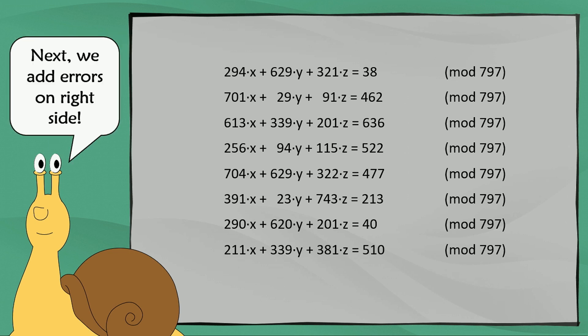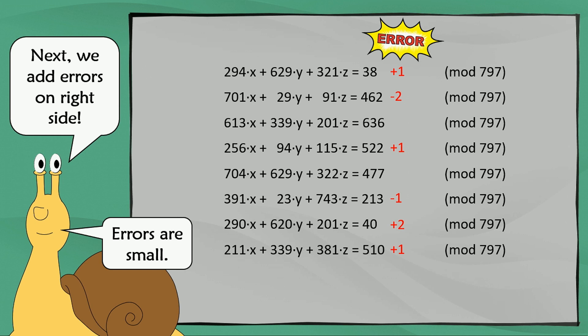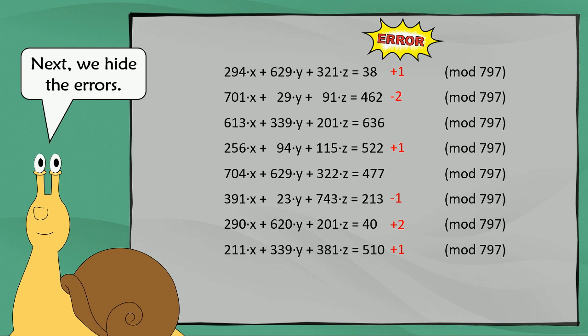Now we're going to do something you have probably never done at high school or university: we are going to add errors on the right side of the system. For example, we add one here, we subtract two here, we don't change the next one. All these errors are small compared to the modulus — the modulus is almost 800, while all these errors are 1, 2, or 0. So we have pretty small errors. And now we are going to hide these errors, so we don't write 38 plus 1, we only write 39, and so on. Now all these errors are not visible anymore.